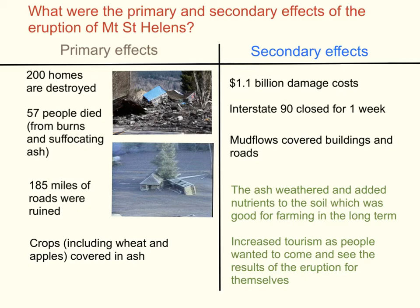The secondary effects include 1.1 billion US dollars in damage costs. Interstate 90, a main road, was closed for one week. Mud flows covered buildings and roads and had to be cleared before people could access homes or businesses. Some positive secondary effects include ash weathering and adding nutrients to the soil long term, making the area good for farming, and an increase in tourism which brought income into the area.